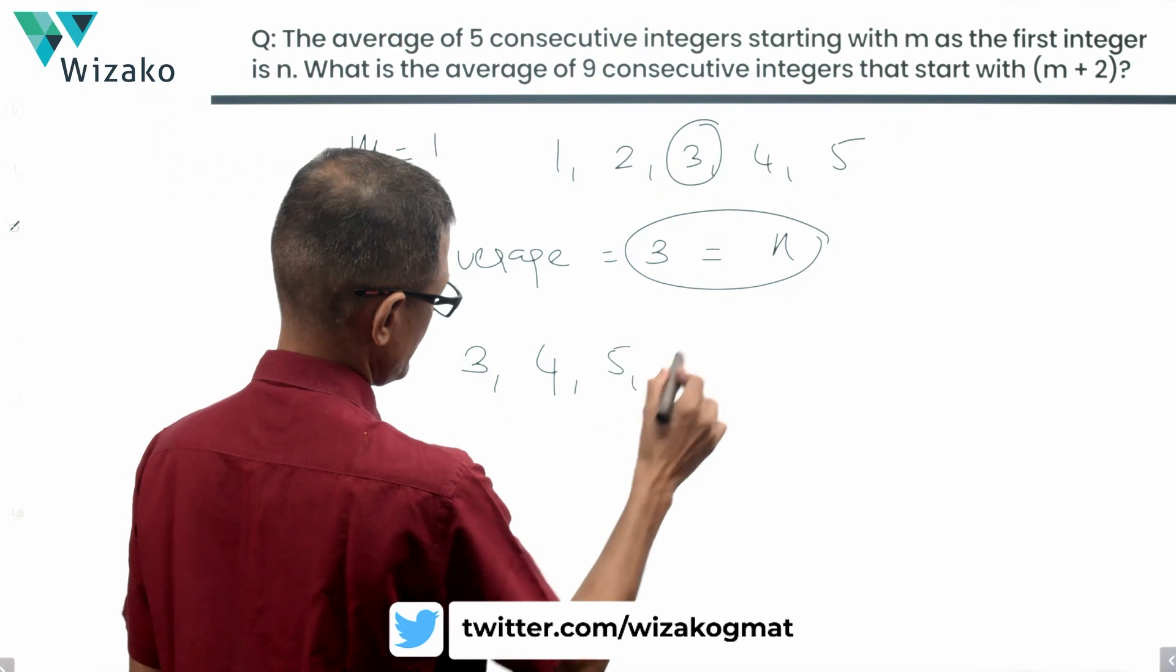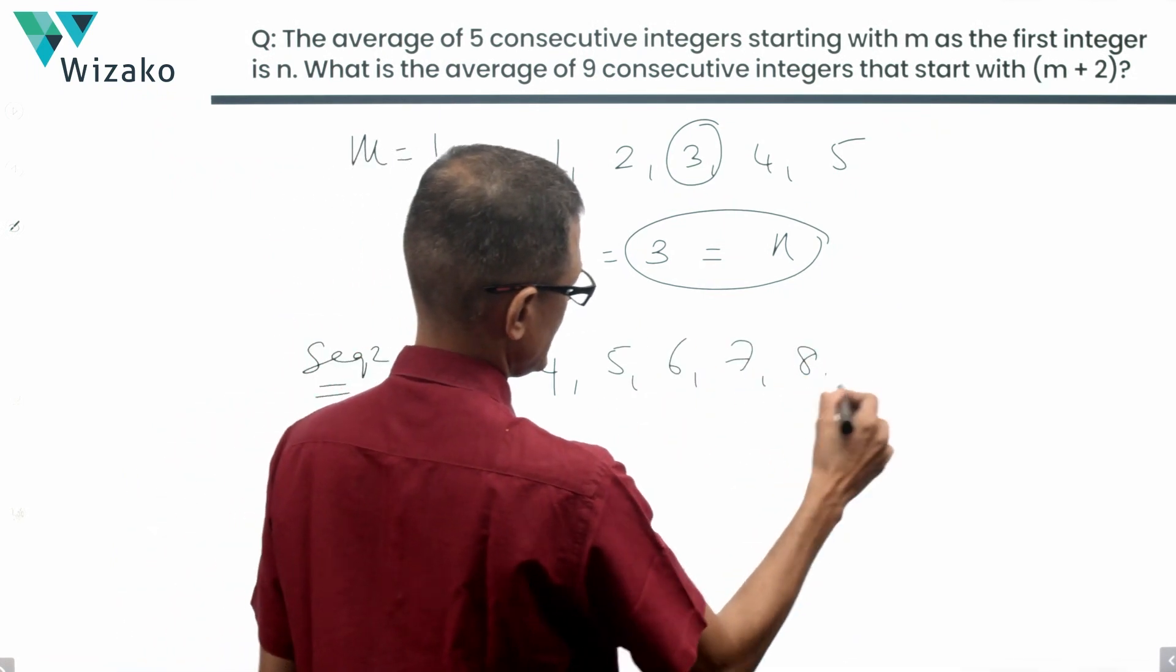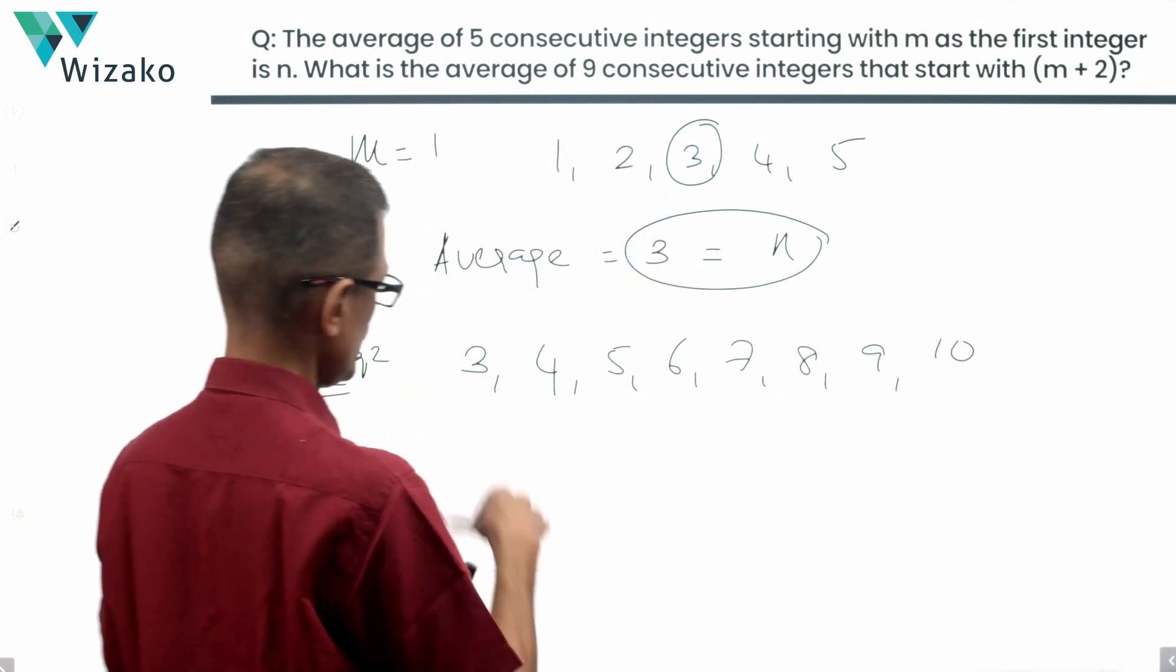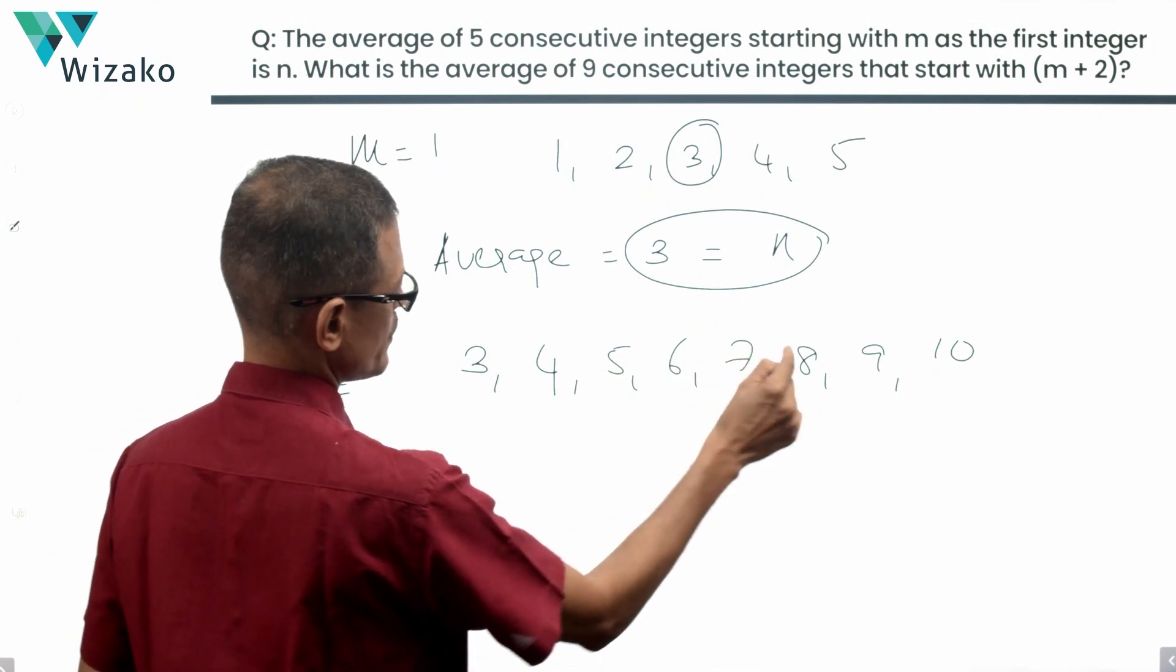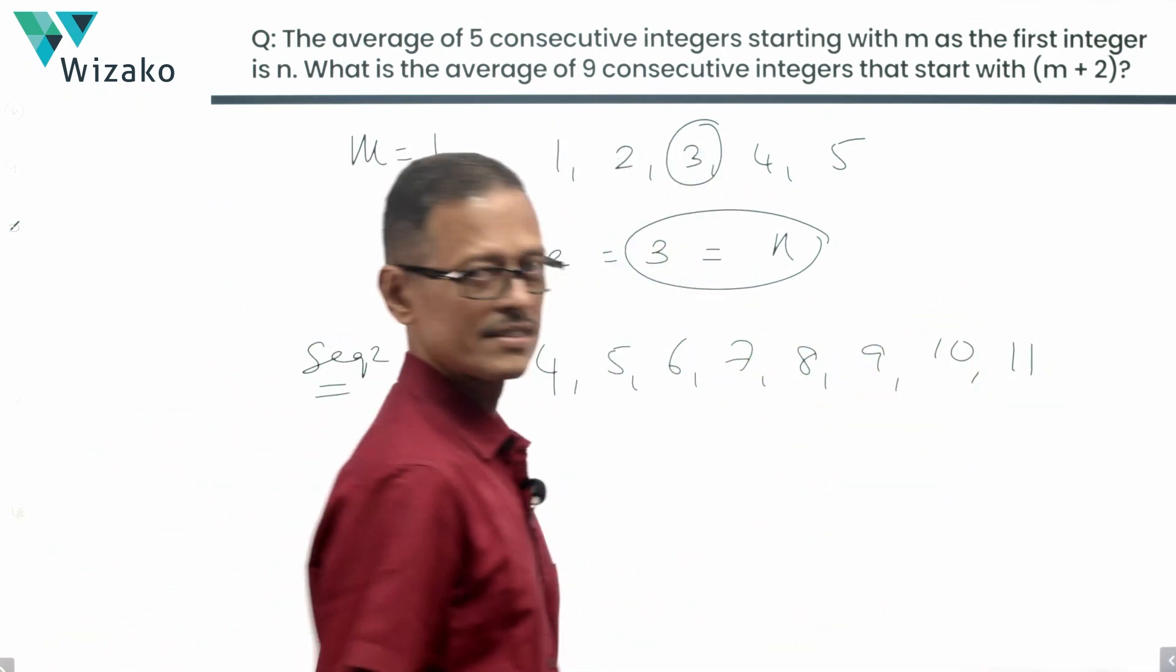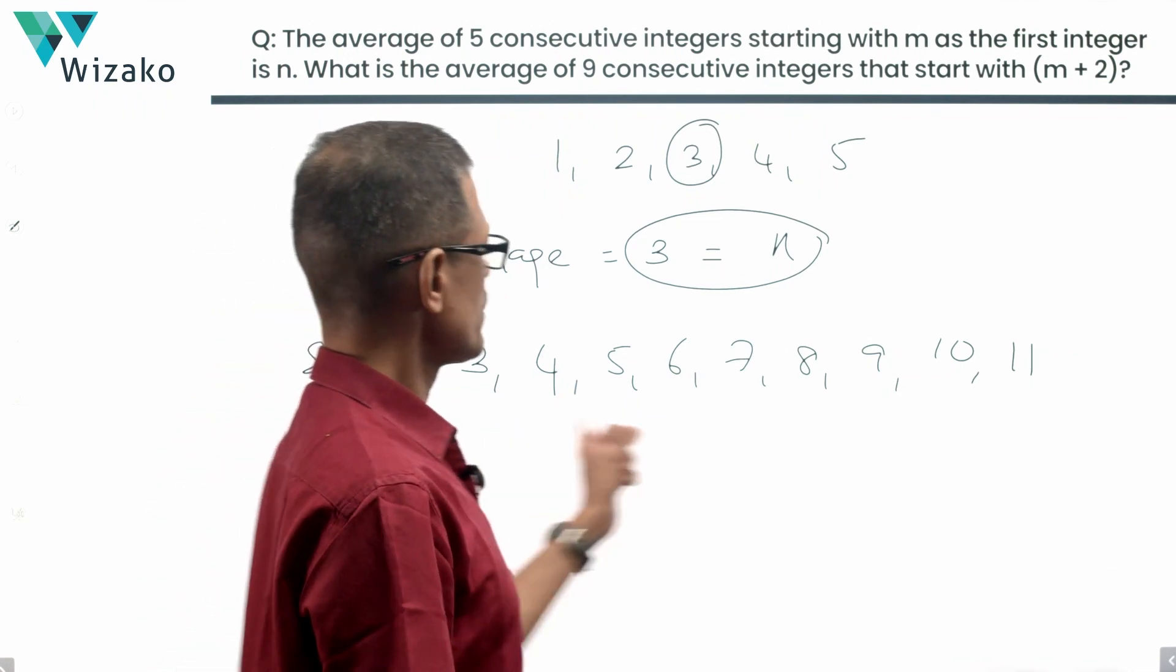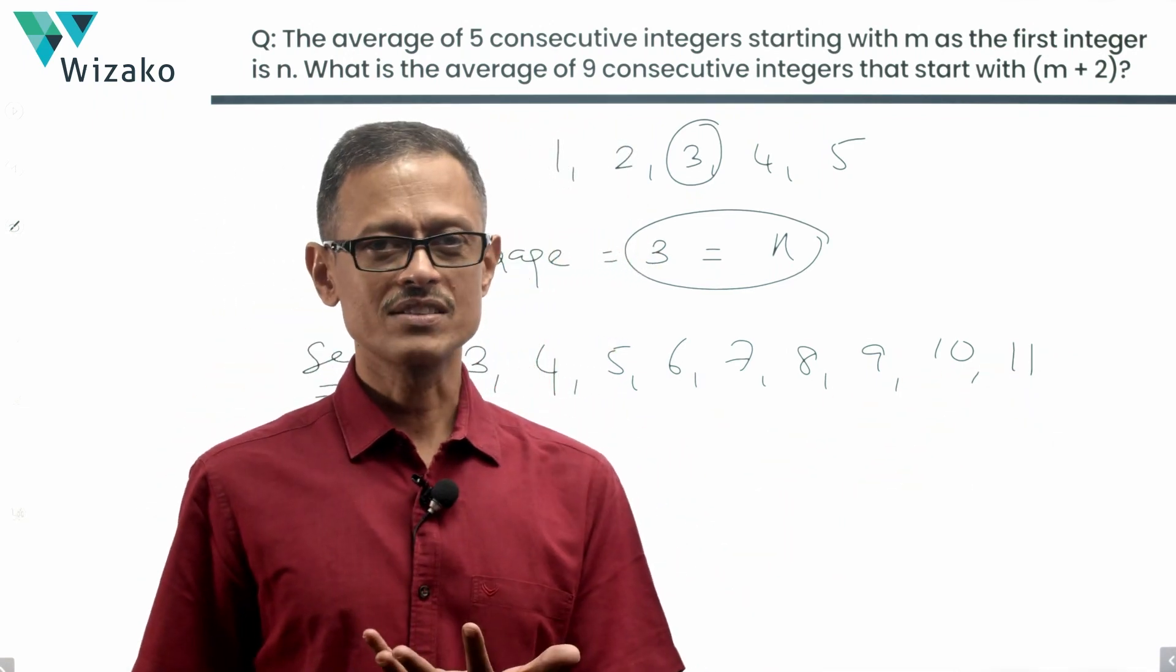3, 4, 5, 6, 7, 8, 9, 10. Count it: 1, 2, 3, 4, 5, 6, 7, 8. One more to go: 11. This is the second sequence. How many numbers are there in the sequence? There are nine numbers in the sequence.